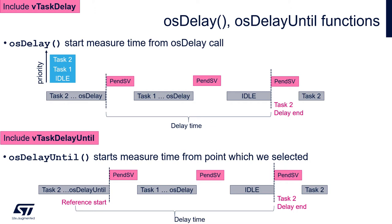OSDelayUntil calls vTaskDelayUntil and requires inclusion of vTaskDelayUntil within FreeRTOSConfig.h. It checks the current tick value using xTaskGetTickCount, subtracts this value from the specified delay, and then sends the calling task from run to blocked state for the remaining milliseconds period.